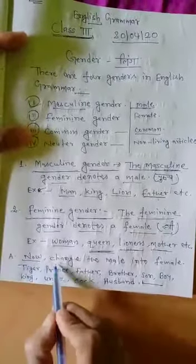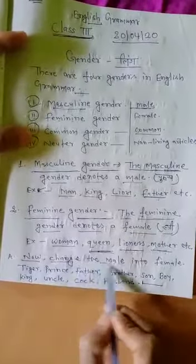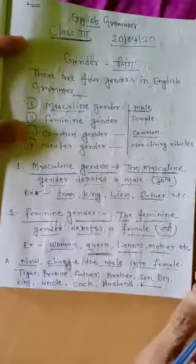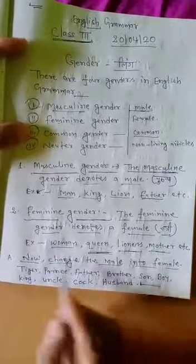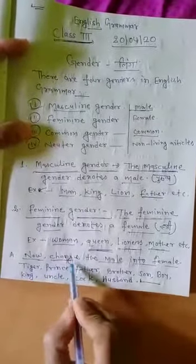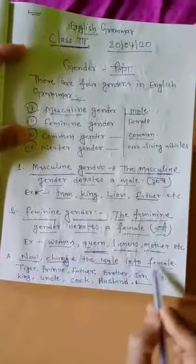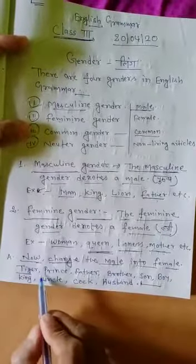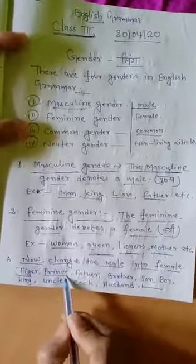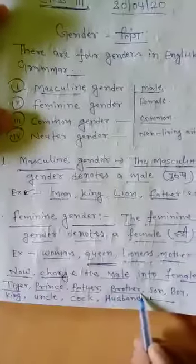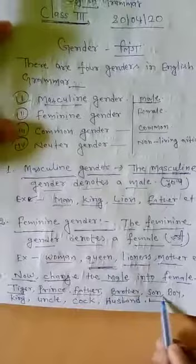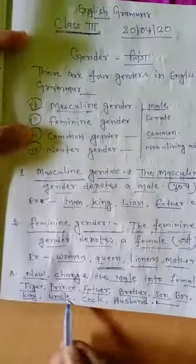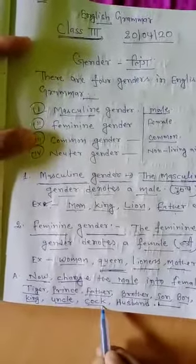Now change the male into female. Male words: tiger, prince, father, brother, son, boy, king, uncle, cock.